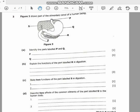This is the part of the alimentary canal of the human being. We have P, Q, R, and S. Identify the parts labeled P and Q. We need to identify the parts labeled P and Q.